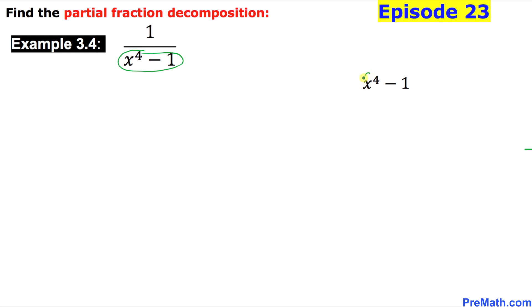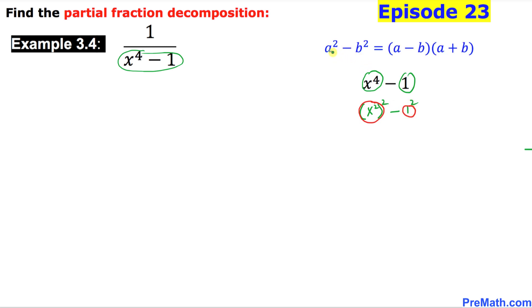Let me show you how we are going to manipulate this. x⁴ could be written as (x²)² and 1 could be written as 1². Now we have the difference of two squares, so we use the fact a² minus b² equals (a minus b)(a plus b). That gives us x² minus 1 times x² plus 1.